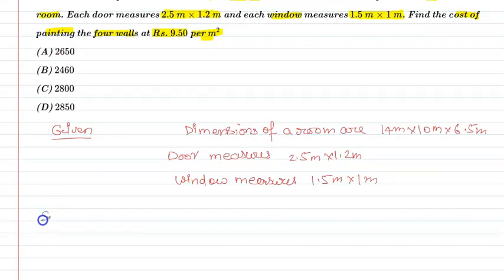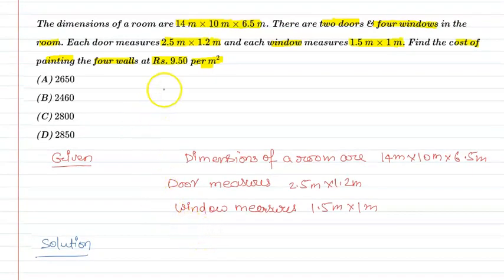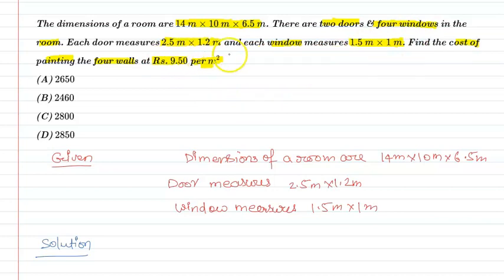Let's move on to the solution part. Imagine your room has dimensions 14 meter × 10 meter × 6.5 meter, with two doors and four windows. Door की dimension 2.5 meter × 1.2 meter है और window की dimension 1.5 meter × 1 meter है।